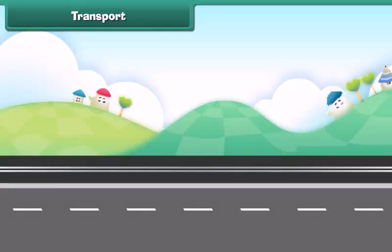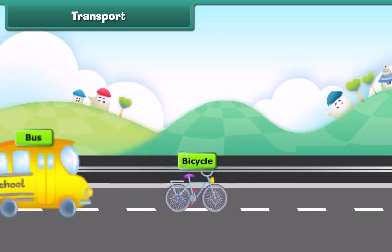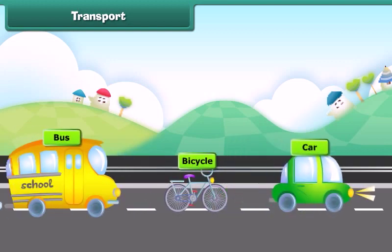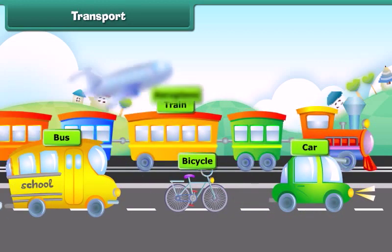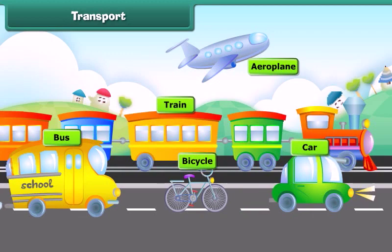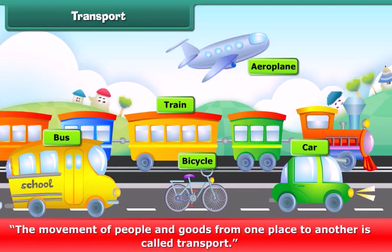Dear friends, we all go from one place to another by different vehicles like bicycle, bus, car, train and airplane. The movement of people and goods from one place to another is called transport.